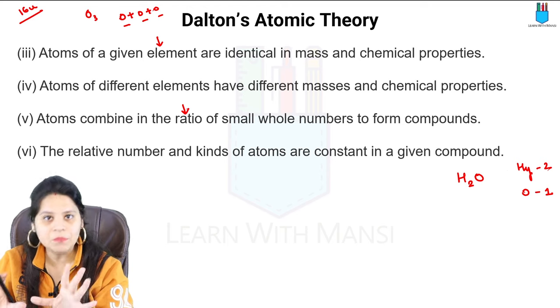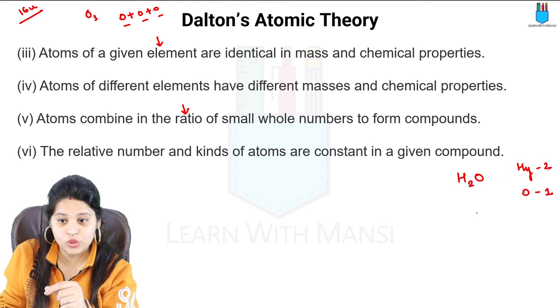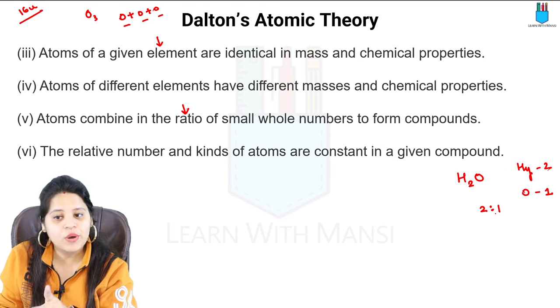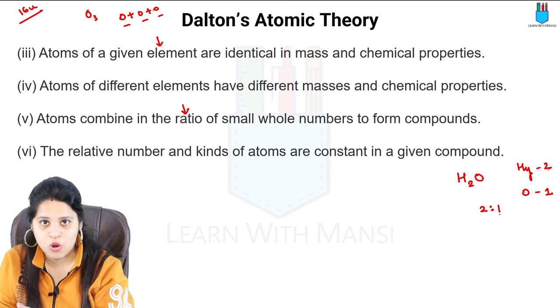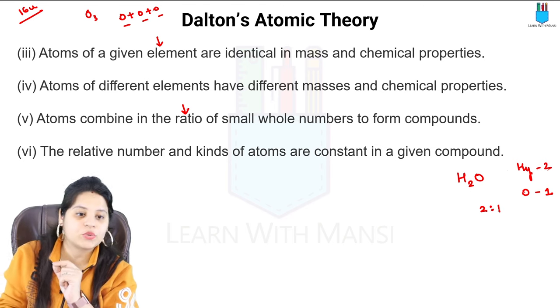Here the count is about the number of atoms. If we look at this ratio for H2O, it is 2 to 1 — two hydrogen to one oxygen. So it is about the number of atoms.